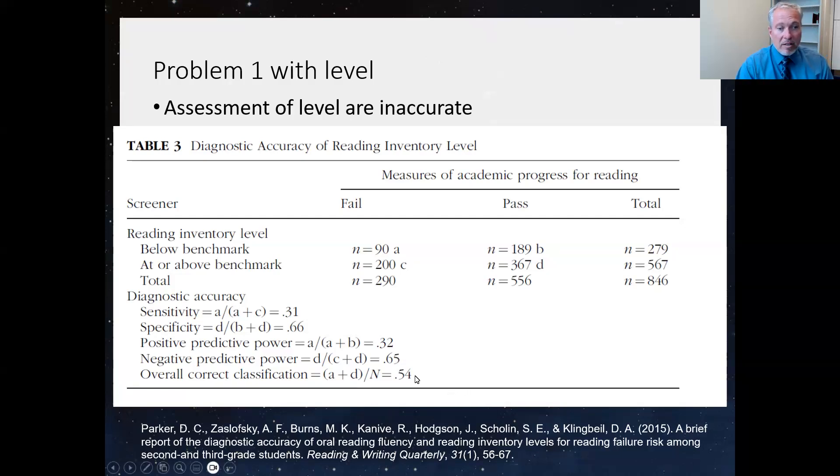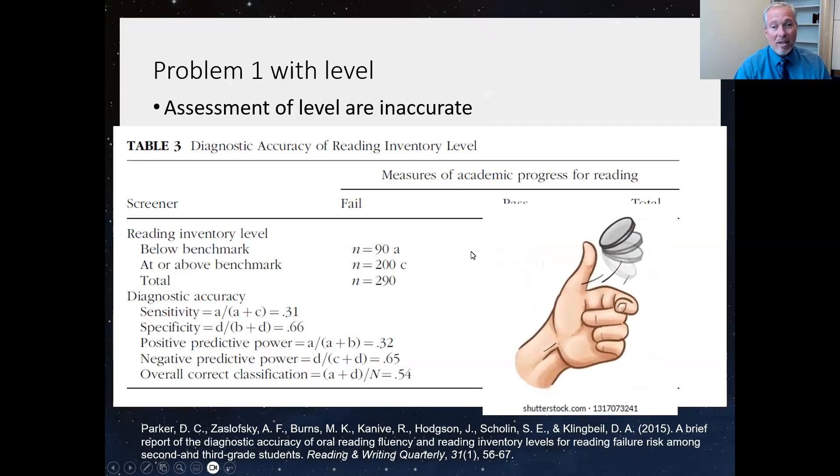Now, what I'm much more worried about is this. Among the 290 kids who didn't do well on the MAP, only 90 of them did not do well on the F&P, the benchmark assessment system, which is only 31%, which is alarming, which is shockingly low. Probably the lowest estimate of identifying a struggling reader that I've ever seen. And then the overall correct classification is 54%, which means you could spend thousands of dollars to buy this test, train all your teachers, take 20 or 30 minutes per kid, and you'll get it right just as often. It doesn't lead to very accurate decision-making when it comes to evaluating reading skills. That's problem number one.